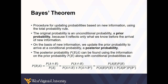On the basis of new information, we update the prior probability to arrive at a conditional probability, or what we call a posterior probability. The posterior probability of event B given A can be found using information on the prior probability along with conditional probabilities, as illustrated by the set of formulas at the bottom of the slide. We're going to go through some examples and you'll feel pretty good about conquering this by the end.